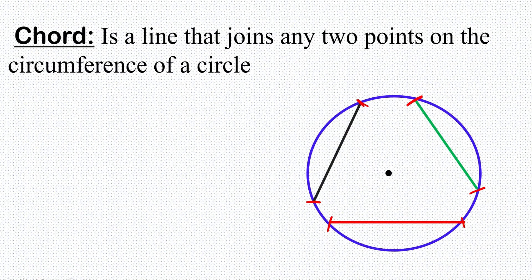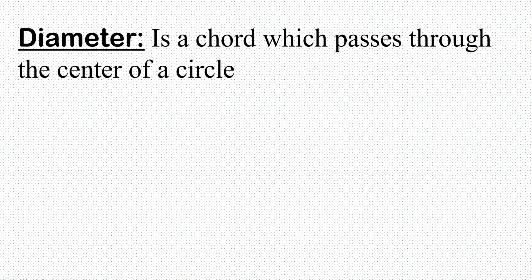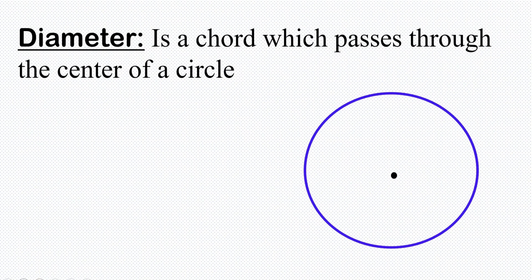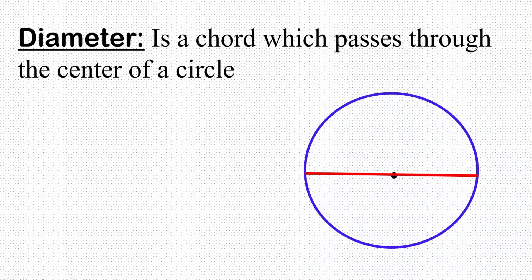The next part of the circle is diameter. A diameter is a chord which passes through the center of a circle. So the type of chord which passes through the center is a diameter — that is the clear difference. Any line which passes through the center of the circle, whether vertical or horizontal, becomes a diameter.